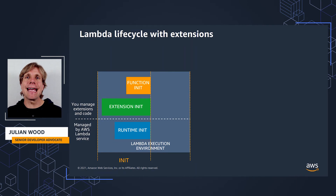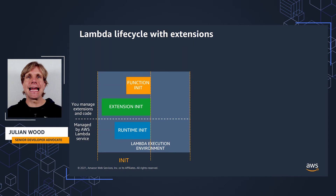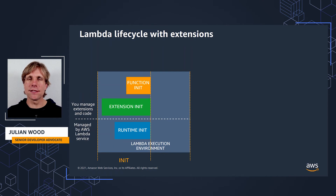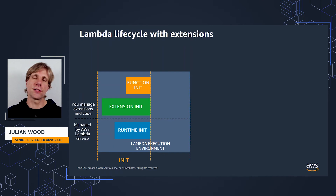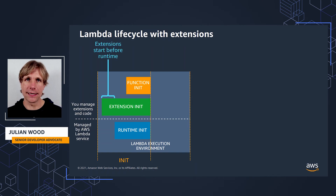We can see here how the init phase of the Lambda lifecycle is enhanced. When setting up the execution environment, Lambda searches the /opt/extensions folder, finds any extensions, and runs them as separate processes. The extension files do need to be executable for Lambda to run them — if not, you'll get an access denied message. This happens before the Runtime starts.